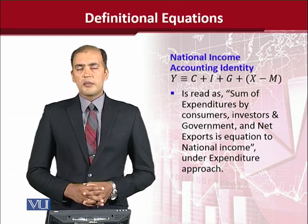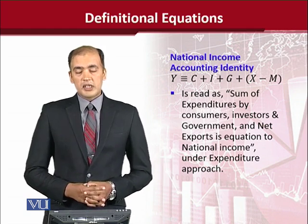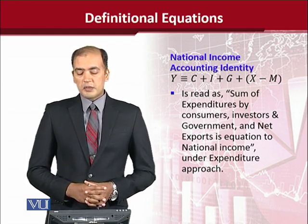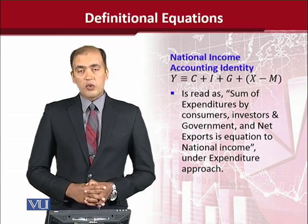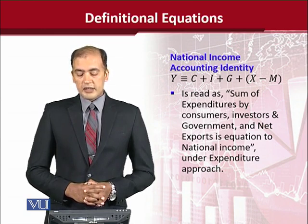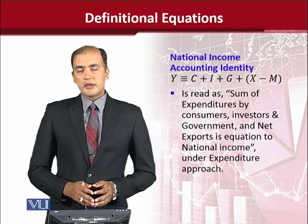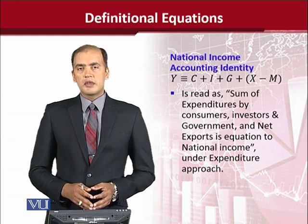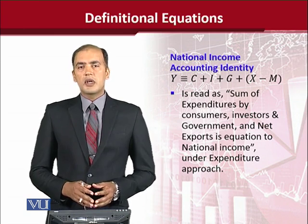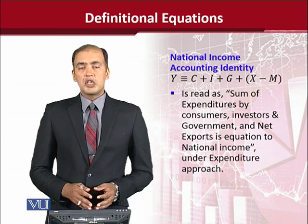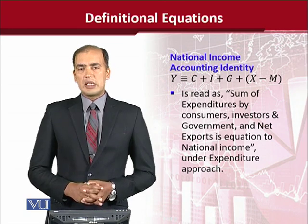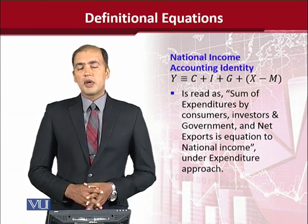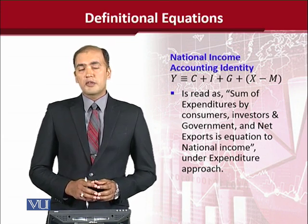Now let's take another example from macroeconomics — a very famous example known as the National Income Accounting Identity. It is explained that Y is identically equal to the sum of expenditures by consumers, investors, governments, and net exports. We have tried to read the identity as it deserves to be read: we should use 'identically equal' rather than just 'equal.' However, in usual analysis we overlook this and use equality instead. It is an identity showing the definition of national income viewed from the lens of the expenditure approach.